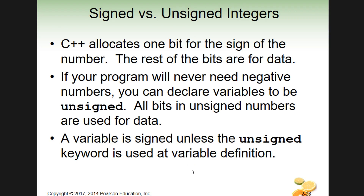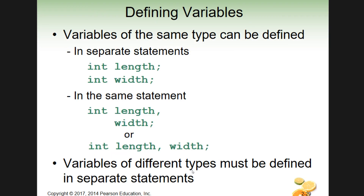We may deal with signed/unsigned later on, but for now we'll keep it to the basics. So variables of the same type we can define in separate statements or in the same statement. If you look at the way these are done — length and width — we have int length with a semicolon, that's one complete statement. Then int width with a semicolon, that's a second complete statement. So they're separate, both defined.